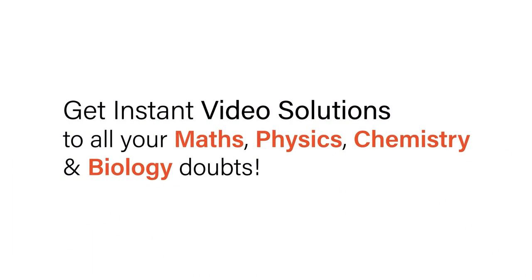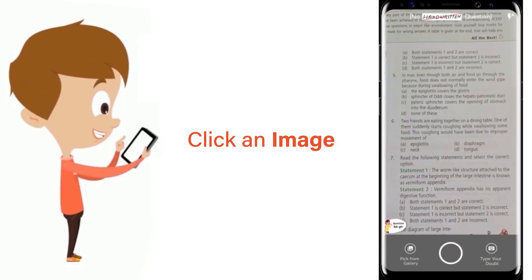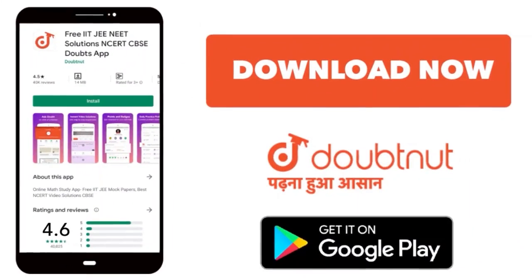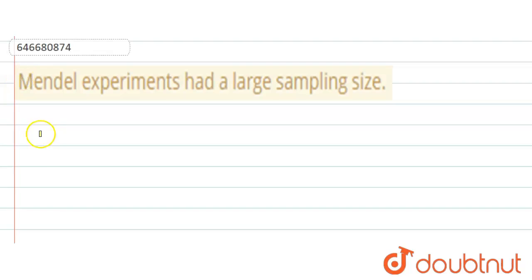With Doubtnet, get instant video solutions to all your maths, physics, chemistry, and biology doubts. Just click the image of the question, crop the question, and get instant video solution. Download Doubtnet app today. The question is: Mendel experiments had a large sampling size.